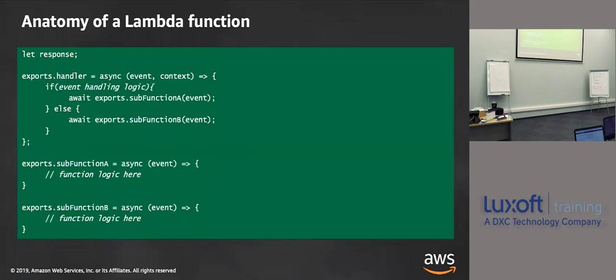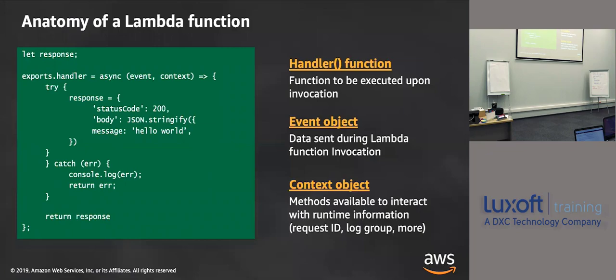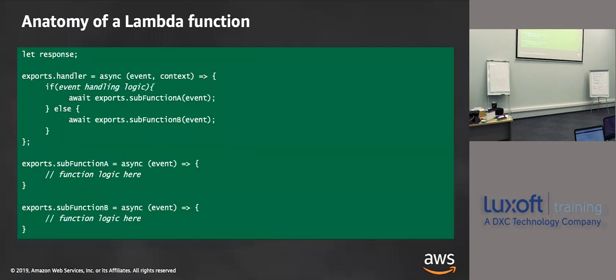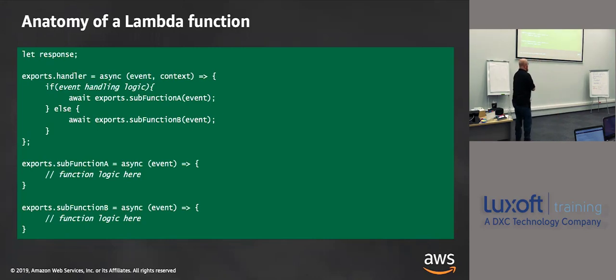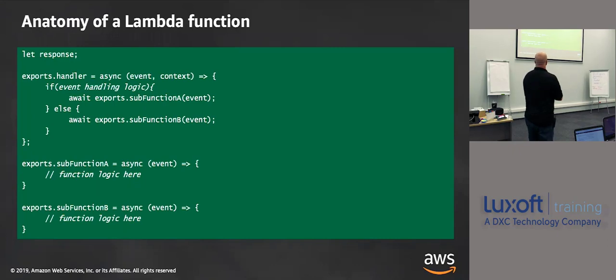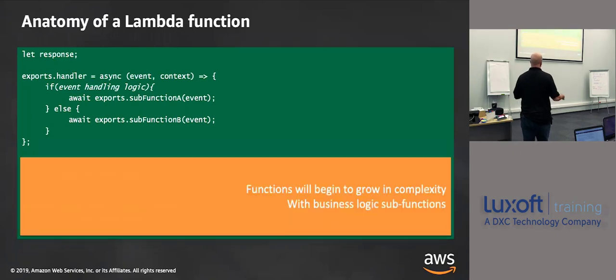Let's expand on this. We have the three things we need to work on: we have our handler, which I showed you how to do; you have the event; and you have the context object. When we look at a Lambda function as we start getting bigger — earlier I showed you the big lambda function, the async, the smaller ones. When we start building these out, you have a handler, and now we've got some sub-functions that we want to show. These functions will begin to grow in complexity and get bigger with business logic and sub-functions.